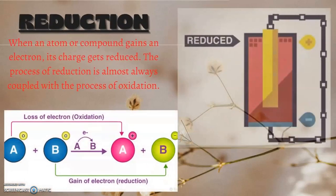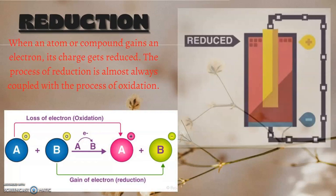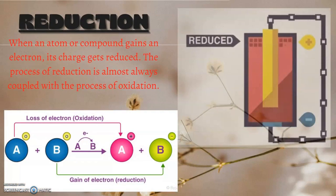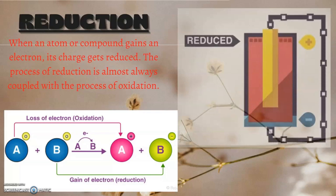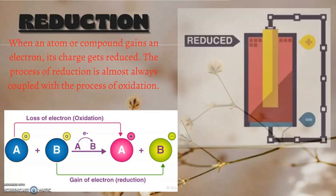Moving on, we have chemical property that is reduction. When an atom or compound gains an electron, its charge gets reduced. The process of reduction is almost always coupled with the process of oxidation. Here is a representation which shows loss of electron is oxidation and gain of electron is reduction.